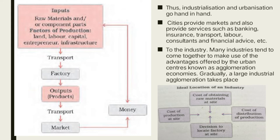Many industries tend to come together and share locational advantages — sharing market area, technology, and every aspect required for production. The hub or urban center providing all these basic amenities is called an agglomeration economy. A large industrial agglomeration takes place where industries provide one another with banking, insurance, transport, labor, consultants, financial advisors, market area, storage facilities, and agents — all available at one place, helping one another.